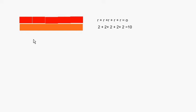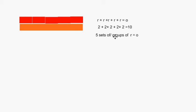The other thing we can do now is say, well, how many reds do I have here? I've got 1, 2, 3, 4, 5. So I can write 5 sets of reds. We might write it as 5 sets of, or 5 groups of, reds equals an orange, which is 10.